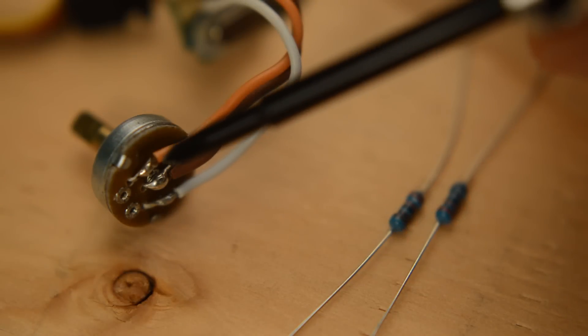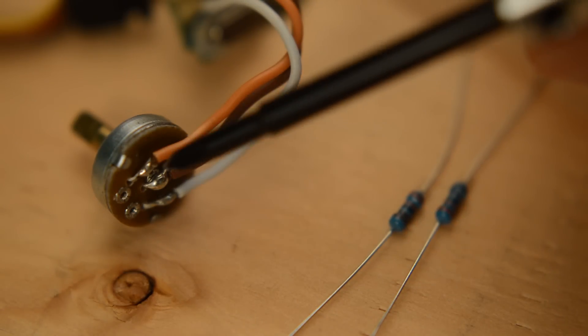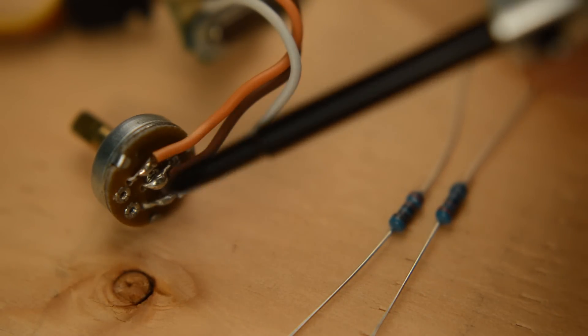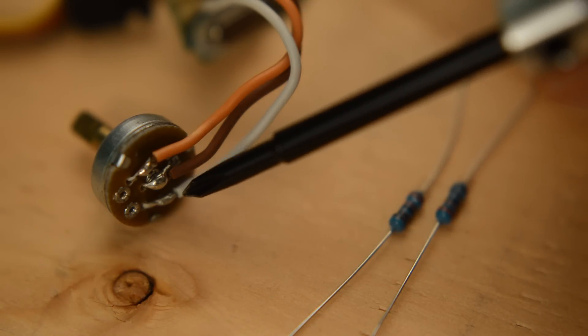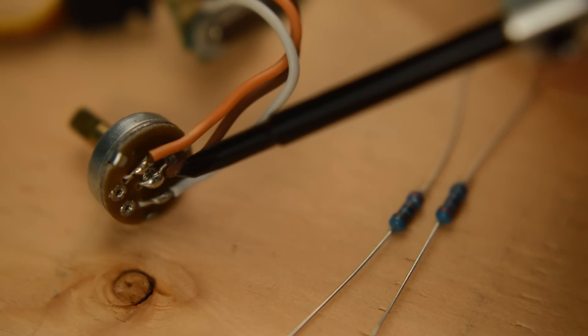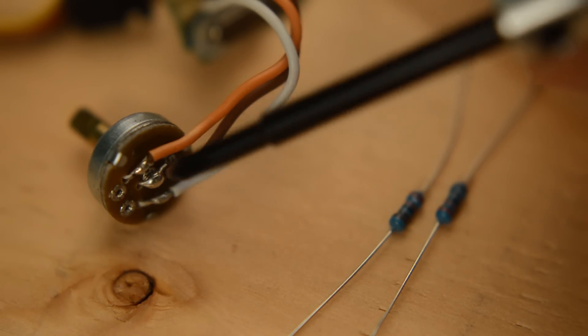Before we go ahead and desolder our potentiometer from our servo and hook up our voltage divider, let's just double check the pinout on this potentiometer. Generally how these things are hooked up is these two outer pins are the upper and lower voltages, and then the middle pin, the center pin here, is the one that sweeps between the voltages along the resistor, like I was showing you a couple minutes ago.